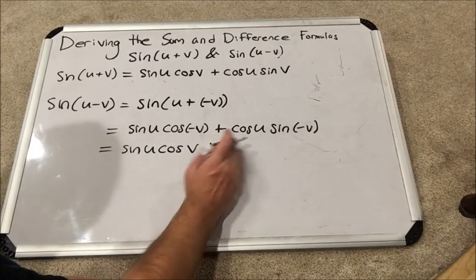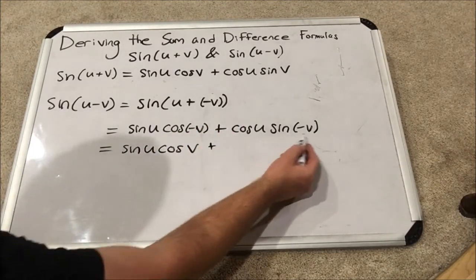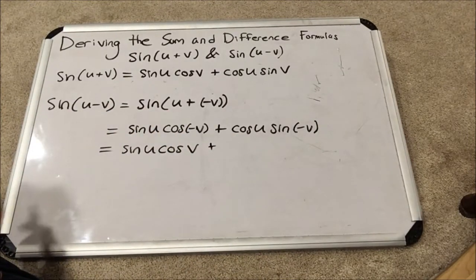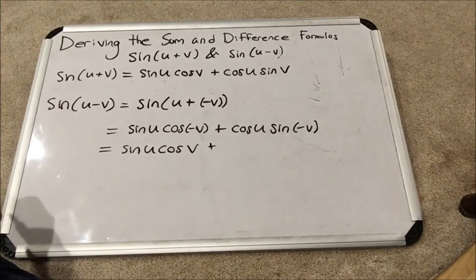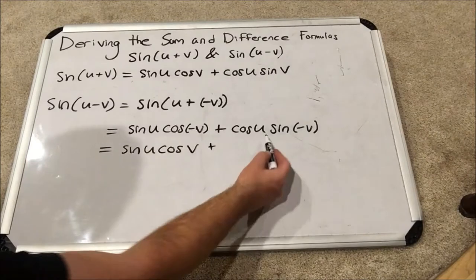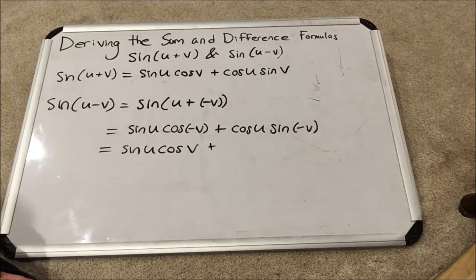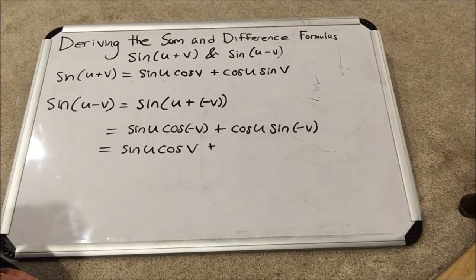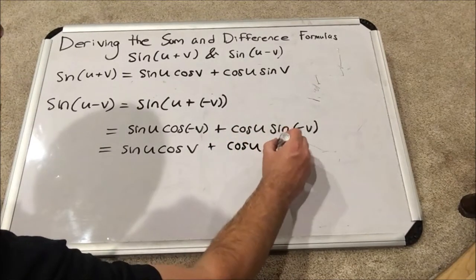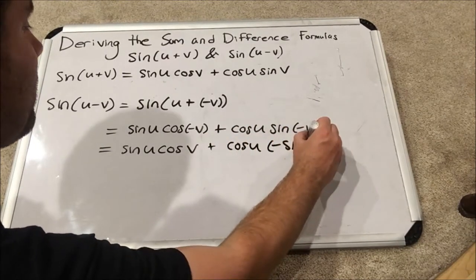Now, let's come over here and look at sine negative V. Sine is odd. Any odd function, when you plug in the negative of your original positive input, you get the negative of the output. So, sine of negative V is equal to negative sine of V. So, we get cosine U negative sine V.